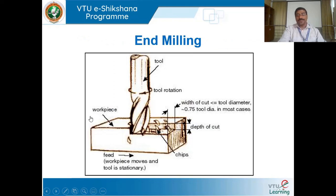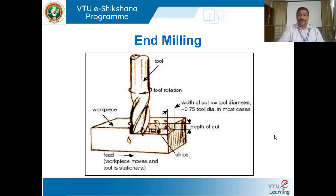Then end milling: end milling operation is basically carried out in a vertical milling machine. By the help of end milling, many operations can be performed — grooving operation, keyway cutting, making a recess in the workpiece, and pocketing operations. It is a very versatile type of multipoint cutting tool.